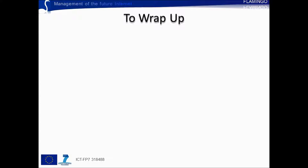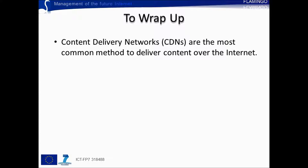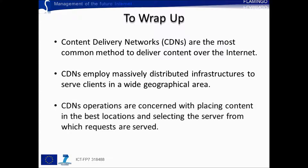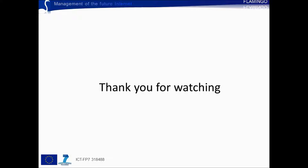We are now coming to the end of this video. To wrap up, there are three main points that we discussed. The first one is that CDNs are today the most common method to deliver content over the Internet. The second point is that CDNs employ massively distributed infrastructures to serve clients in a wide geographical area. Finally, the third point is that CDNs are primarily concerned with placing content in the best available location and selecting the most appropriate servers to serve incoming client requests. I thank you for watching this video, which was produced in the context of the Flamingo Network of Excellence projects of the EU 7th Framework Programme.